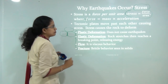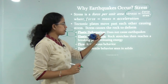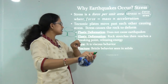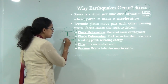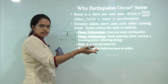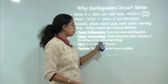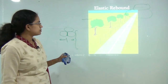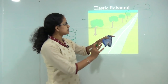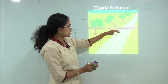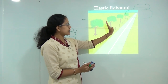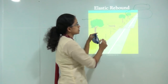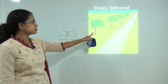Deformation can occur in various ways. There can be plastic deformation, which does not lead to earthquake. Elastic deformation is where rocks are stretched and there is a breaking point. Then there is flow, which is viscous behavior, and fracture, which is brittle behavior in solids. In the elastic rebound diagram, as the plates move due to elastic deformation, you can see the tumbling down of the tree.